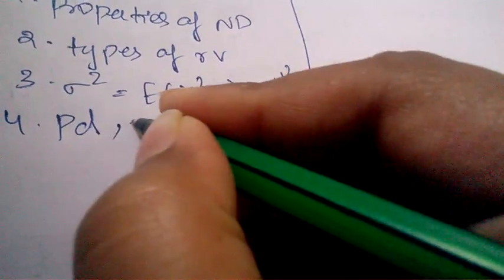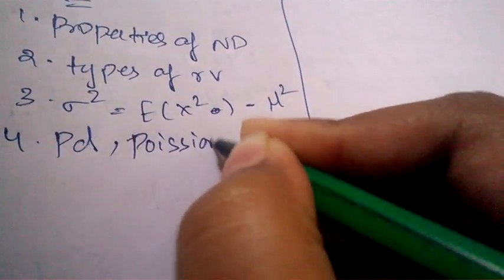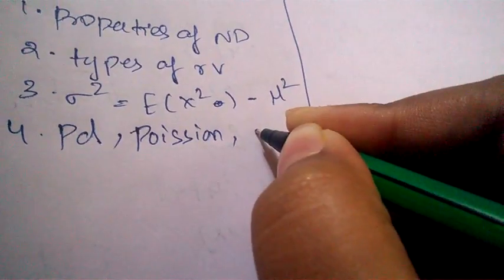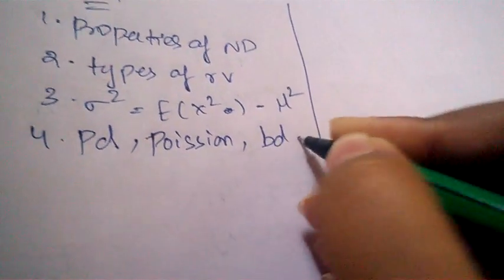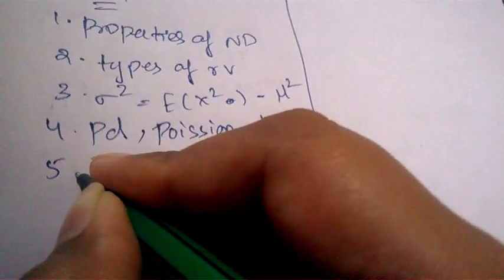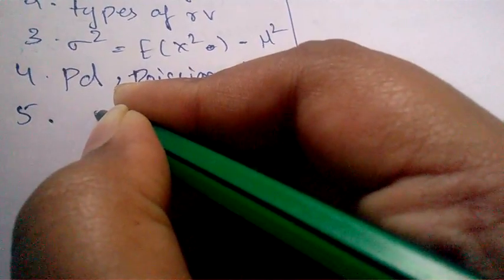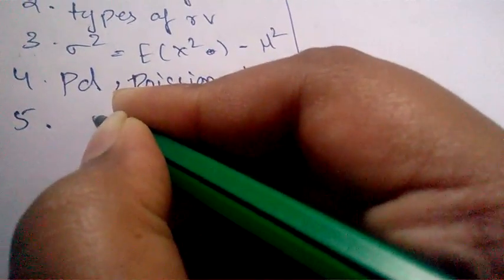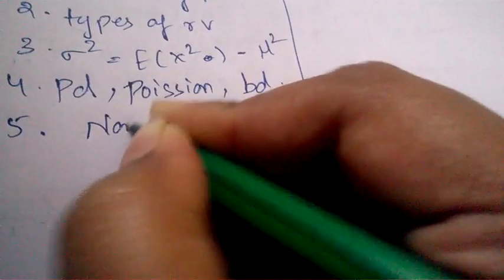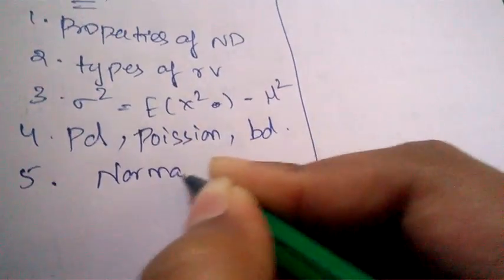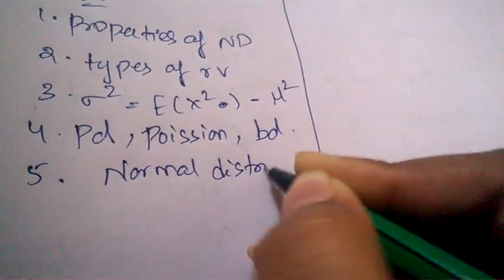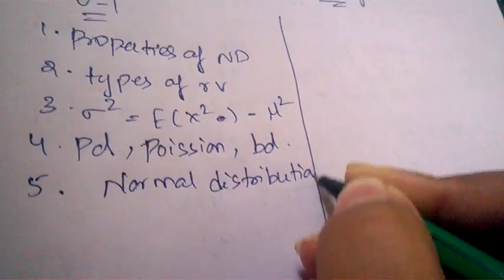What is Poisson distribution? And what is binomial distribution? And other important topics include what is normal distribution.